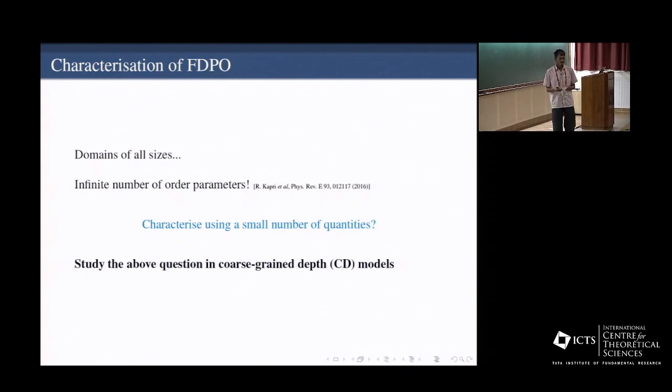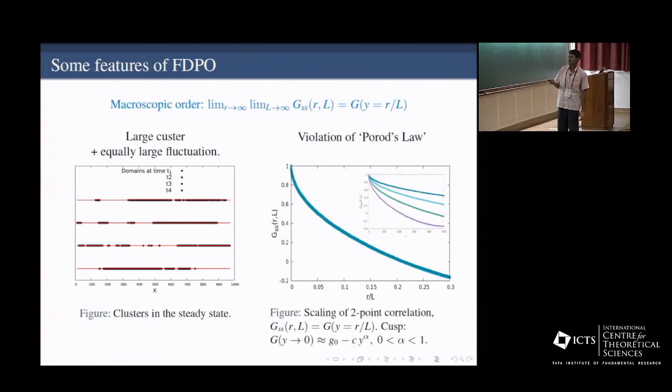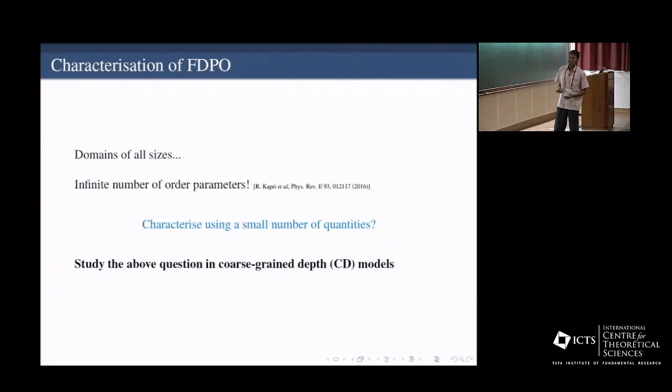The question is, how do you really characterize this kind of phase? Now, you just see that there can be several clusters, and in the thermodynamic limit, you can have infinite number of macroscopic clusters. So in principle, you have to have infinite number of order parameters. One question is, can we reduce the number of order parameters, or number of quantities to characterize this?